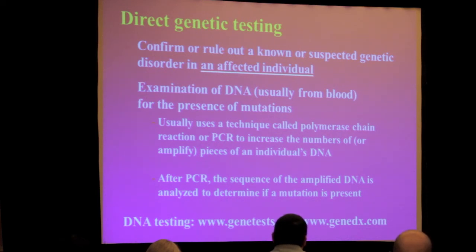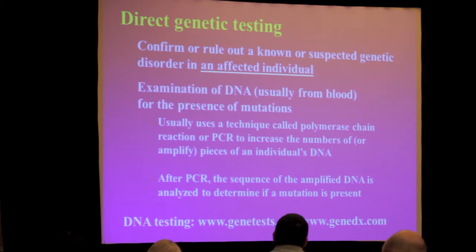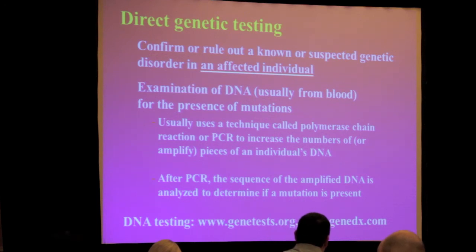When we're trying to figure this out, we can do direct genetic testing to confirm or rule out a known or suspected genetic disorder in an affected individual. To do this, we usually examine DNA from blood for the presence of these mutations. This most commonly uses a technique called PCR, or polymerase chain reaction — a technique that markedly increases or amplifies pieces of an individual's DNA. After PCR, you can then sequence or determine what that sequence of DNA is and analyze it to see if a mutation is present.